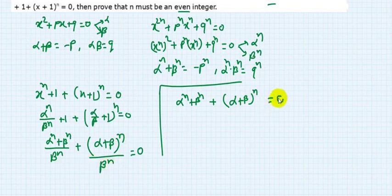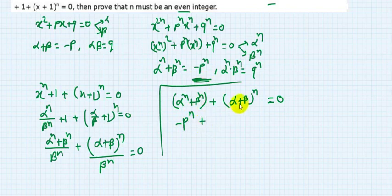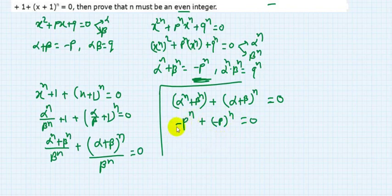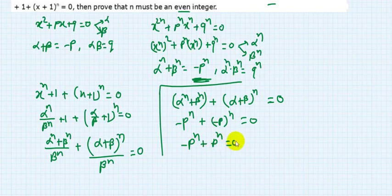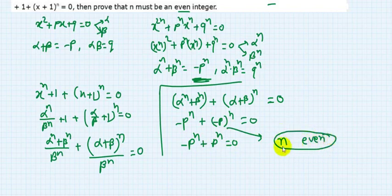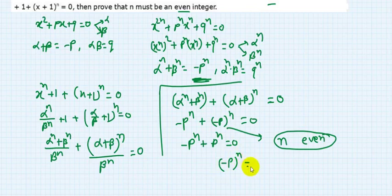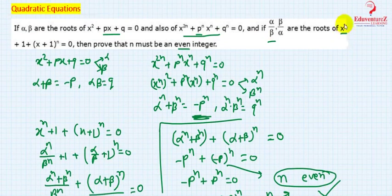From the numerator: alpha to the power n plus beta to the power n plus (alpha plus beta) to the power n equals 0. We know alpha to the power n plus beta to the power n equals minus p to the power n, and alpha plus beta equals minus p, so (alpha plus beta) to the power n equals minus p to the power n. Therefore: minus p to the power n plus (minus p) to the power n equals 0. If n is even, (minus p)^n equals p^n, giving minus p^n plus p^n equals 0, which is satisfied. If n is odd, (minus p)^n equals minus p^n, giving minus p^n minus p^n equals 0, which is not zero. Hence n must be an even integer.